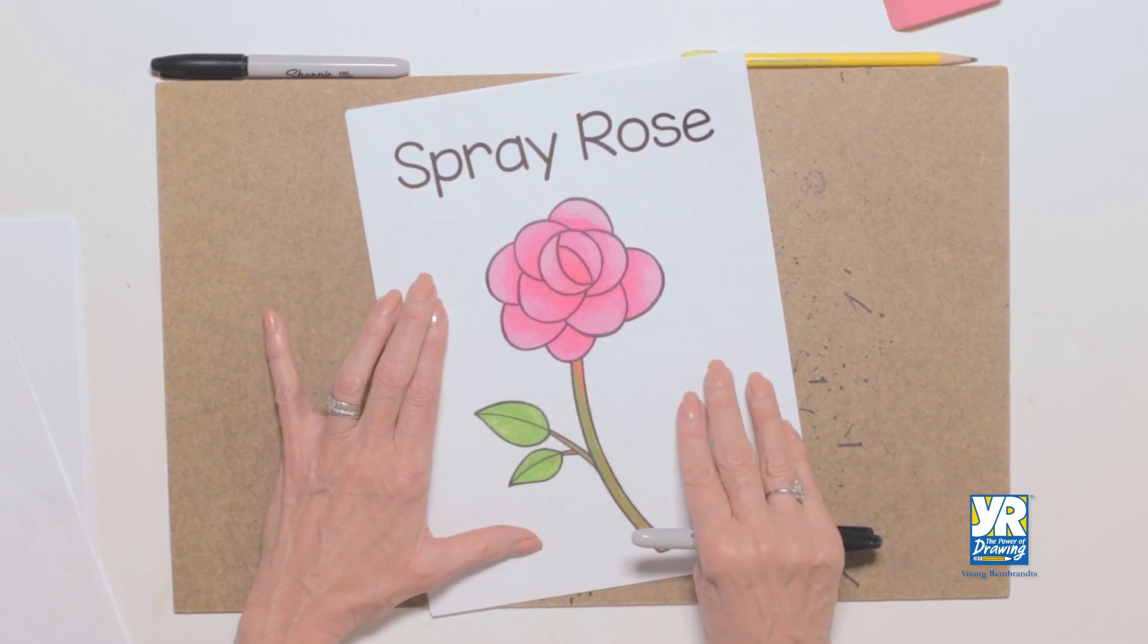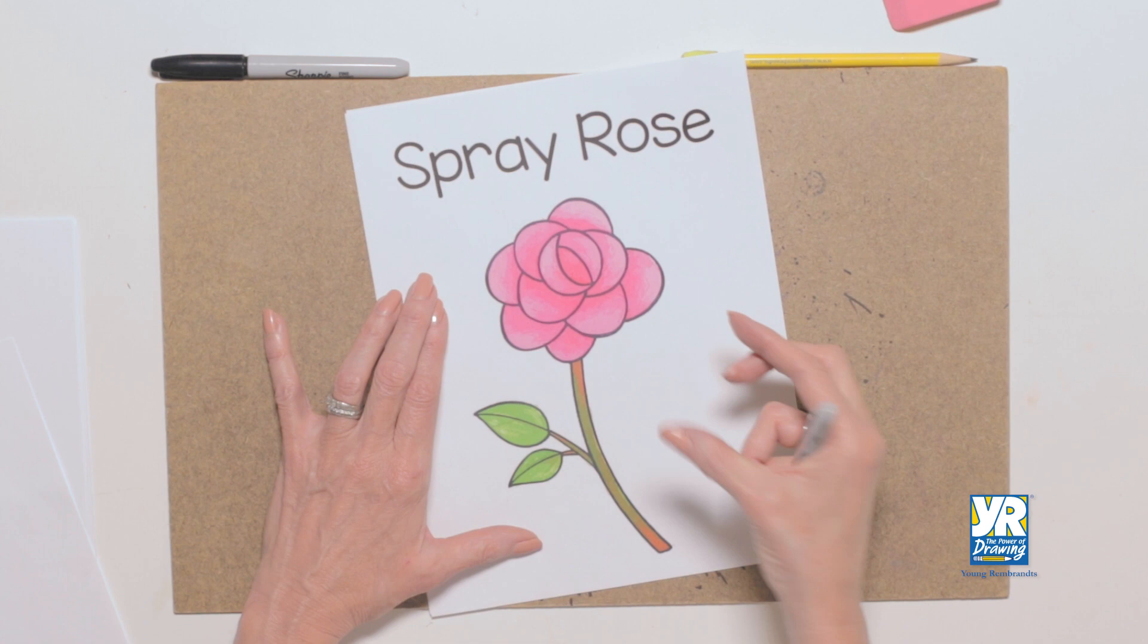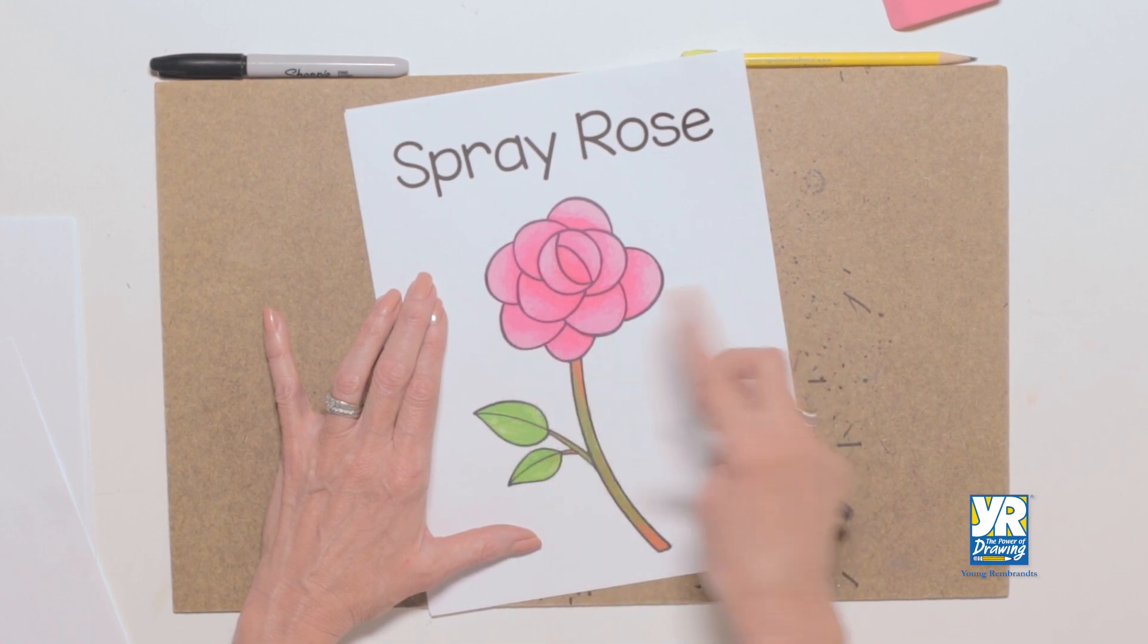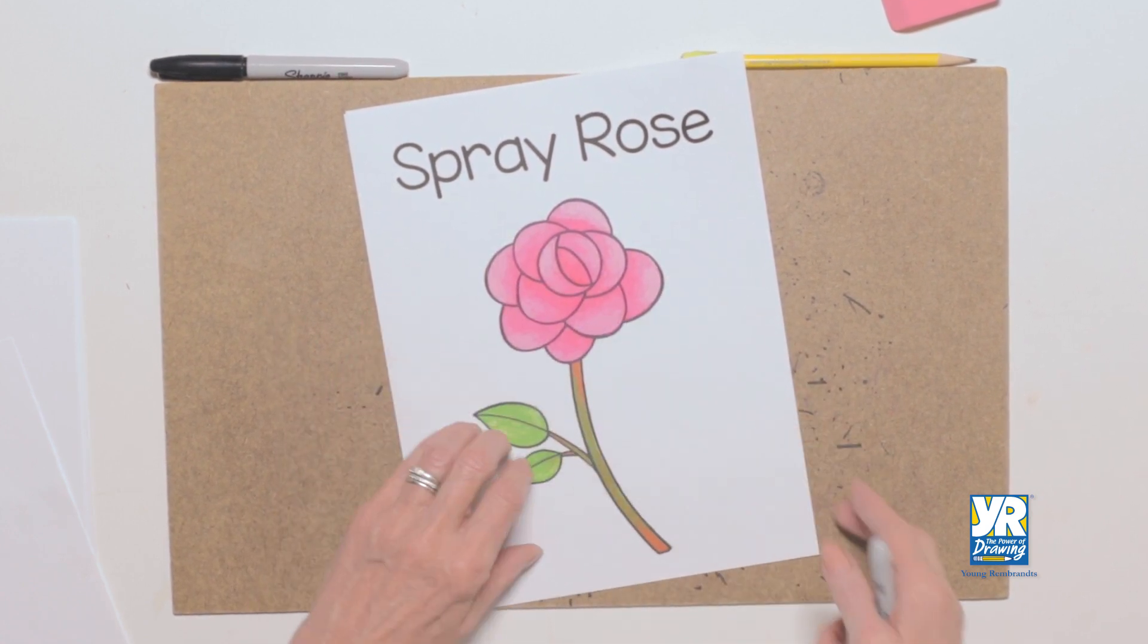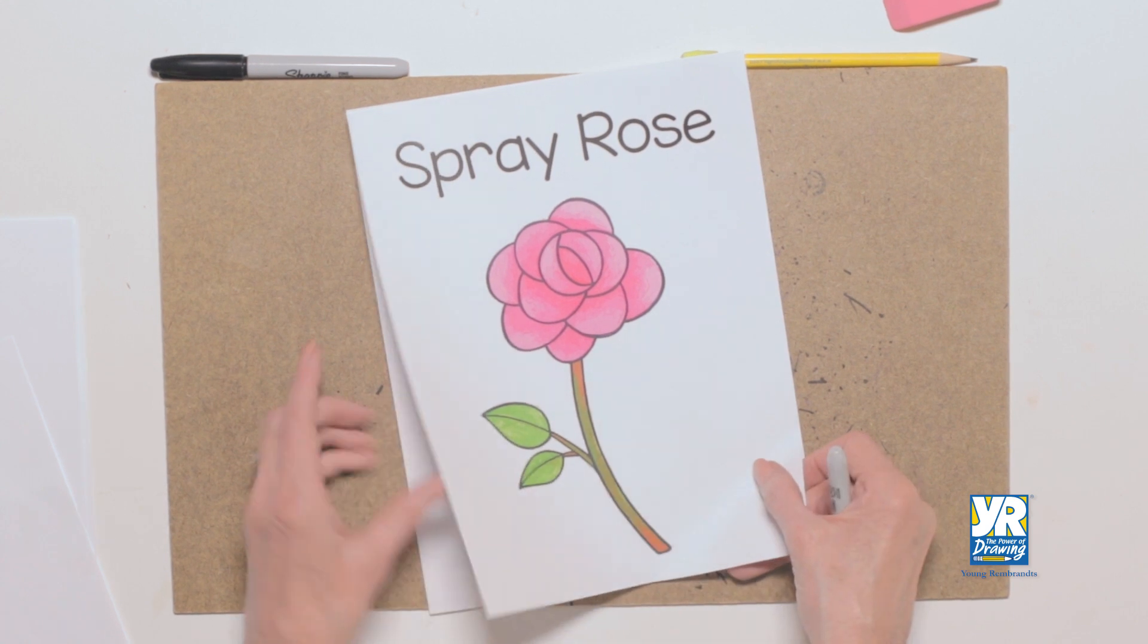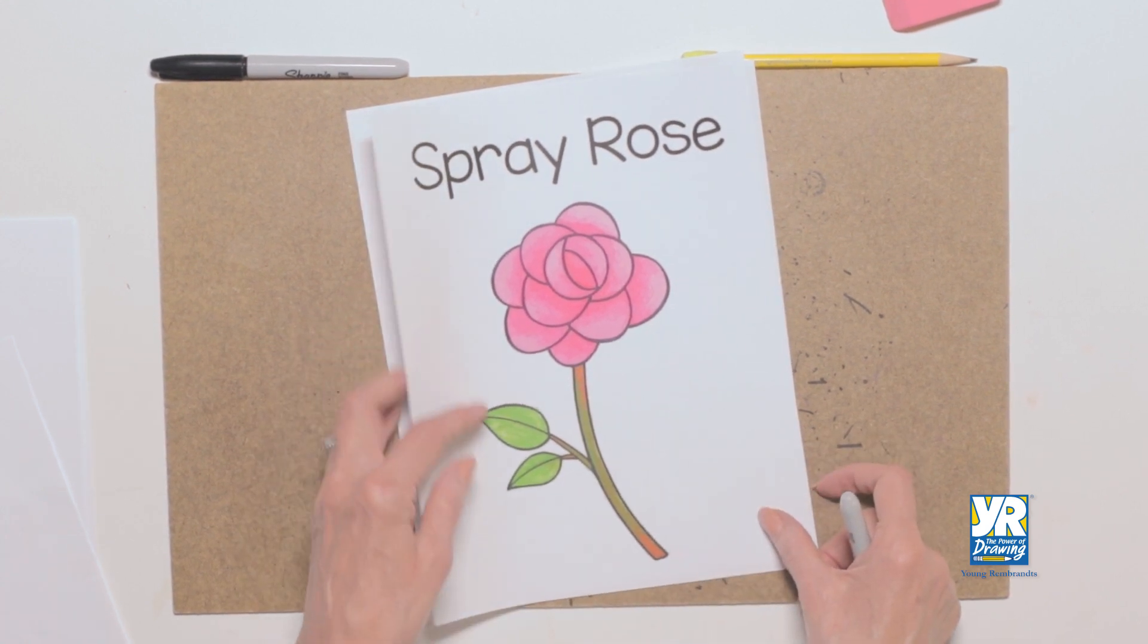We're gonna draw a spray rose, and this is like a little tiny rose that's open or like a regular rose where the petals are showing. Normally those are tricky, but I have some great tips for you. Ready?